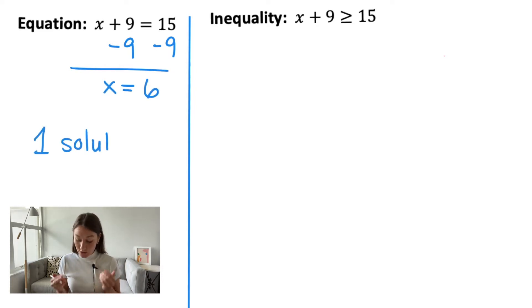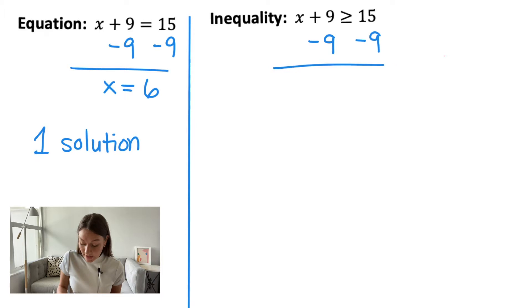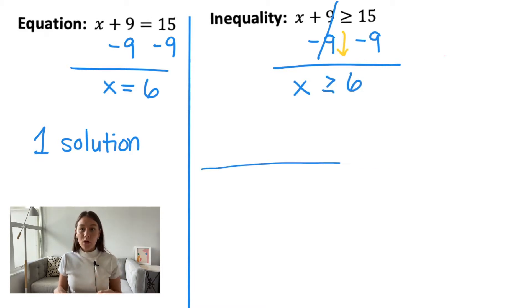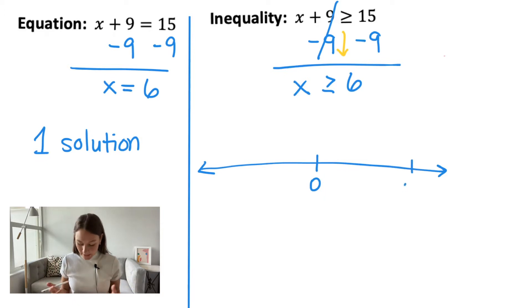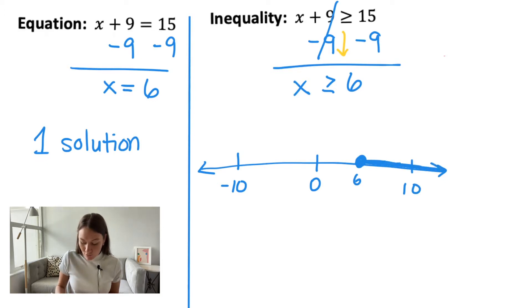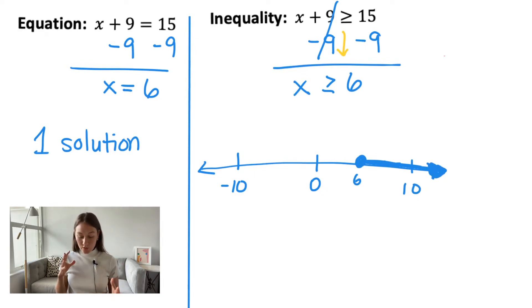Now let's look at an inequality: X plus nine is greater than or equal to 15. You solve it the same way — subtract nine from both sides and bring that sign down. You get X is greater than or equal to six. Anytime you're solving an inequality, I always say put it on a number line so you can visualize the range. I'm going to put a darkened circle on six because it's inclusive of six. X can be greater than or equal to six — it could be six, seven, eight, nine. So the range goes in that direction. It's one solution versus a range.